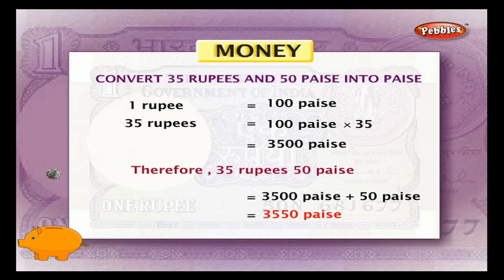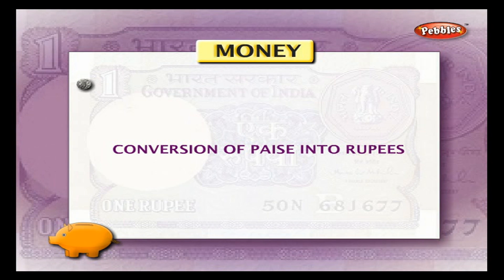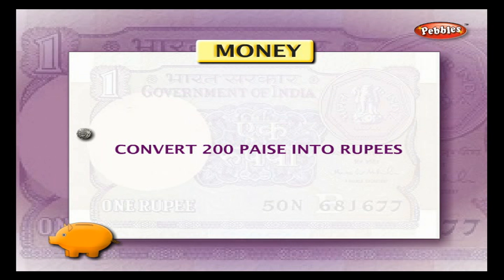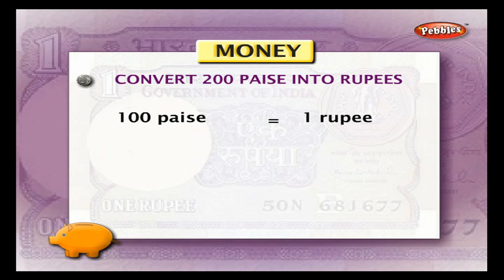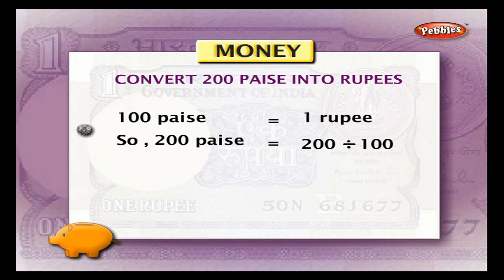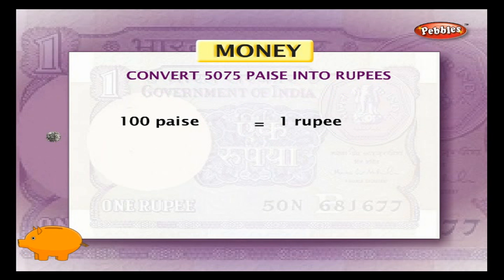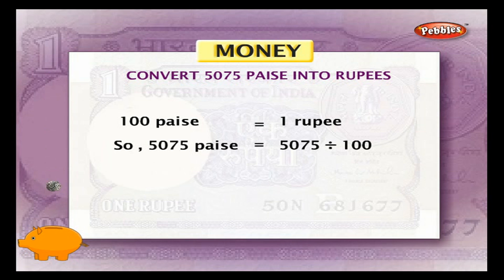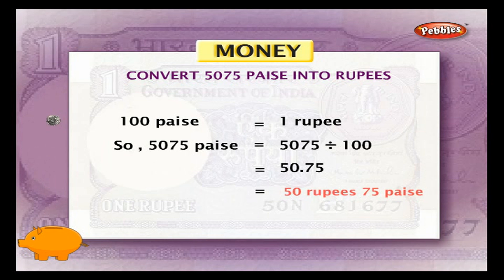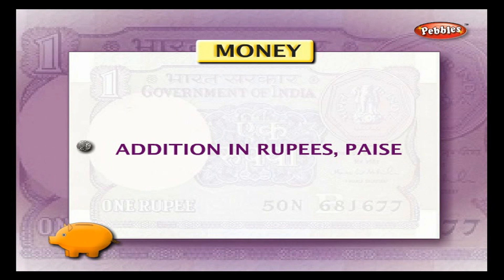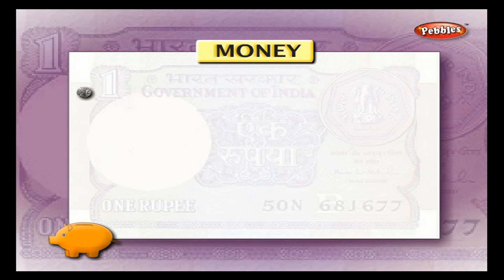Conversion of paisa into rupees. Example 1: convert 200 paisa into rupees. 100 paisa is equal to 1 rupee, so 200 paisa is equal to 200 divided by 100, which is equal to 2 rupees. Example 2: convert 5075 paisa into rupees. 5075 paisa is equal to 5075 divided by 100, which is equal to 50.75, that is 50 rupees and 75 paisa.